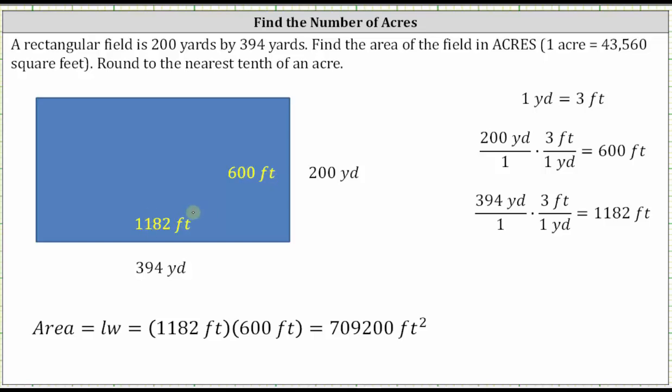And now we find the area of the field in square feet. The area is equal to the length times the width, which is equal to 1,182 feet times 600 feet, which is equal to 709,200 square feet.